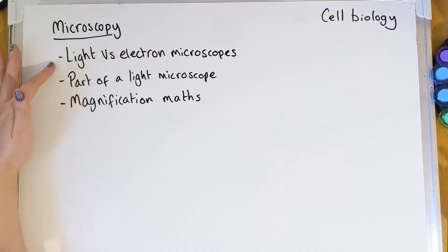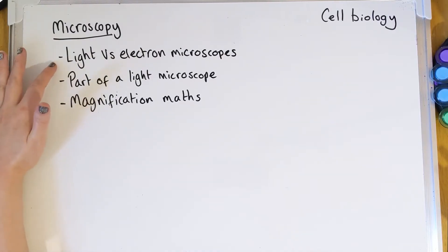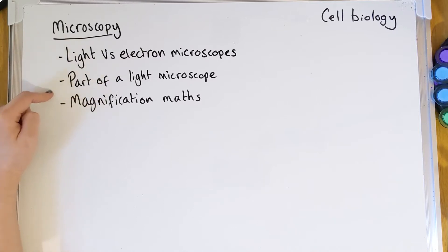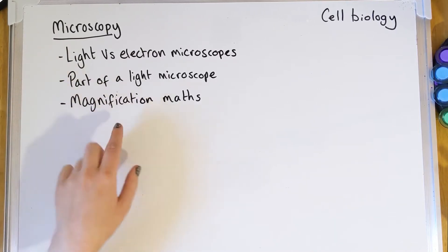Hi everyone, welcome back. Carrying on with some cell biology today, looking at microscopy. We're going to be looking at light microscopes versus electron microscopes, the main differences between them, parts of the light microscope you'd need to recall in an exam, magnification maths including total magnification, and what I call the IAM triangle.